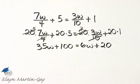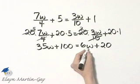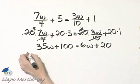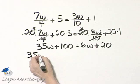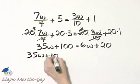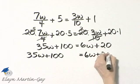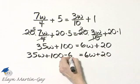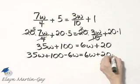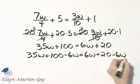Now let's move variable terms to one side, constants to the other side. I will subtract 6w from both sides. So I'm going to rewrite my equation, leave a little space, is equal to 6w plus 20. Now I will subtract 6w on the left side, subtract 6w on the right side.